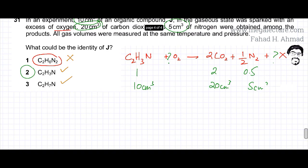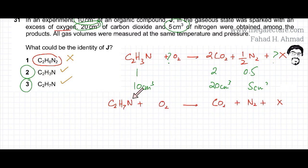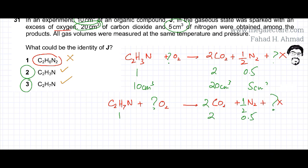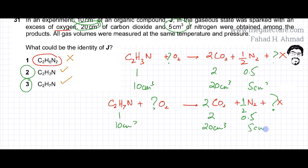Similarly, let's verify option 3. I construct the equation with C₂H₇N reacting with oxygen, producing carbon dioxide, N₂, and some other compound. Balancing: two carbons gives two CO₂, one nitrogen gives half N₂. The mole ratio is 1:2:0.5 — exactly the same as option 2. So 10 cm³ produces 20 cm³ of CO₂ and 5 cm³ of N₂. The volume ratio matches perfectly, so option 3 is also correct.